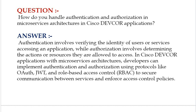Your answer should be: authentication involves verifying the identity of users or services accessing an application, while authorization involves determining the actions or resources they are allowed to access. In Cisco DevCore applications with microservices architectures, developers can implement authentication and authorization using protocols like OAuth, JWT, and role-based access control (RBAC) to secure communication between services and enforce access control policies.